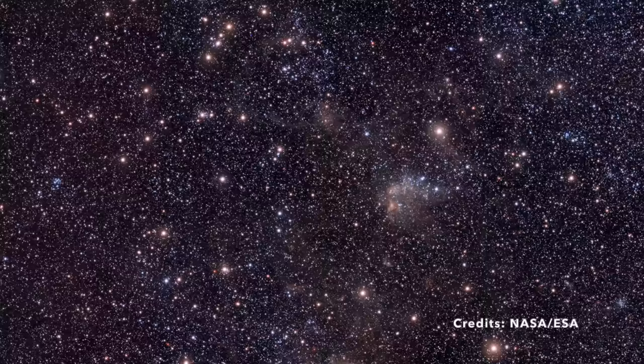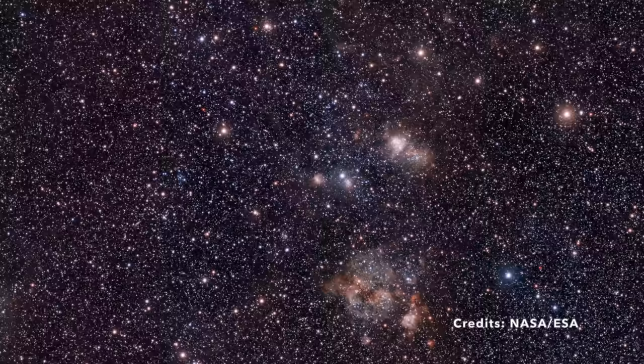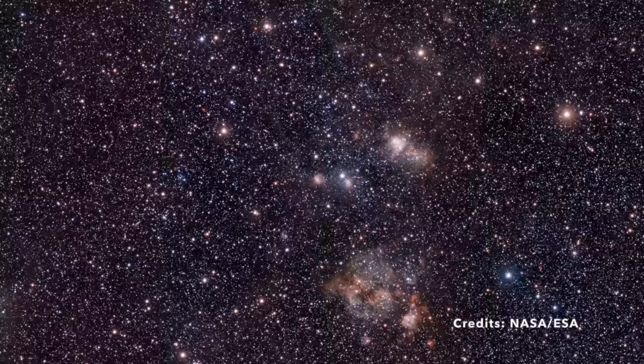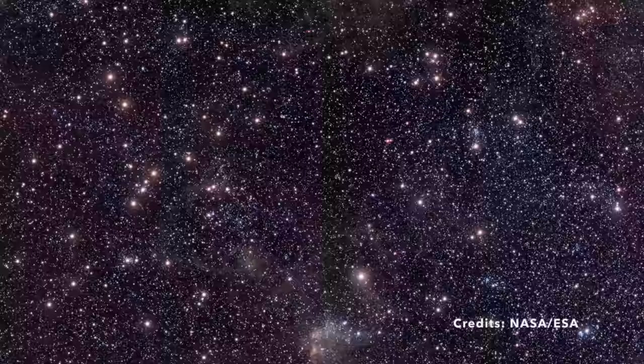But what colors paint this celestial portrait? The image of 30 Doradus was meticulously crafted using filters that capture near-infrared wavelengths. The exposure times were methodically set: 40 minutes for blue, 47 for green, and a generous 81 minutes for red. This intricate dance of filters and timings helps us see a region measuring about 52 by 70 arc minutes on the sky.